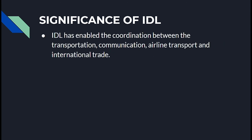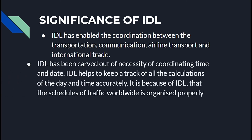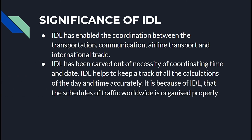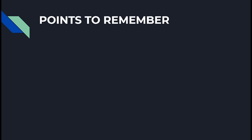The International Date Line, or IDL, has enabled coordination between transportation, communication, airline transport, and international trade. IDL has been established out of the necessity of coordinating time and date. IDL helps to keep track of all calculations of day and time accurately, and ensures that traffic schedules worldwide are organized properly.